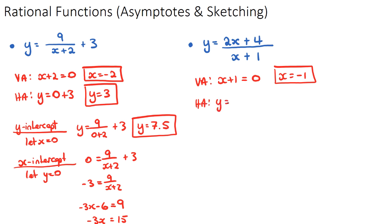For the horizontal asymptote of this example, there is an x on the top. When there is an x on the numerator, the horizontal asymptote y equals is the coefficient of the numerator's x divided by the coefficient of the denominator's x. Here that's two over one, which equals two. There is no vertical shift in this example, so the horizontal asymptote is y equals two.